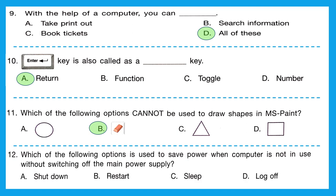Question 12: which of the following options is used to save power when the computer is not in use without switching off the main power supply? The options are shut down, restart, sleep, or log off. The right answer is option C, sleep.